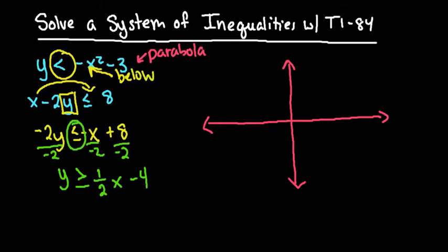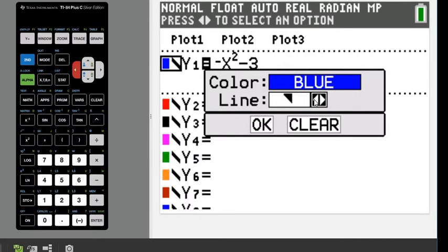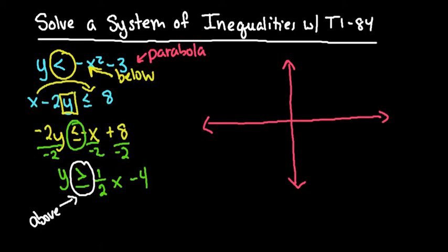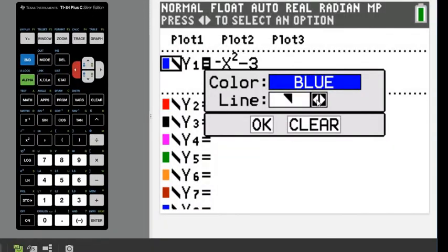The second one, we're going to look at the one where we have y solved for. Since it's greater than or equal to, we're going to shade above. You do have to know this before graphing it in the calculator. For the first one, let me check one more time—we're going to shade below on my paper.